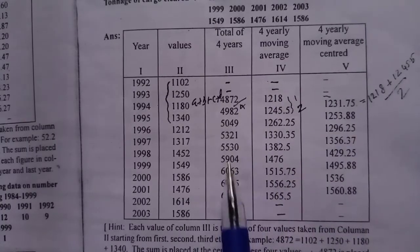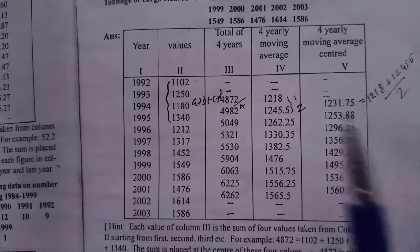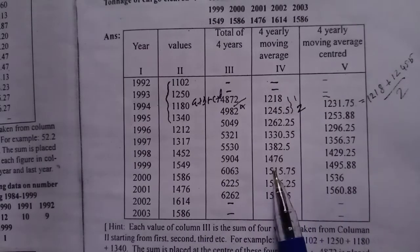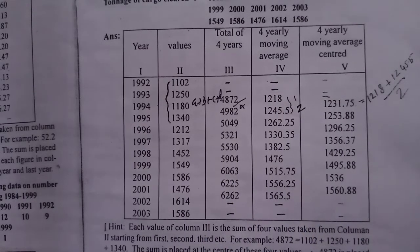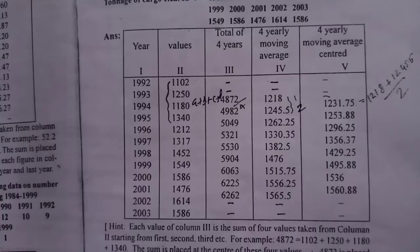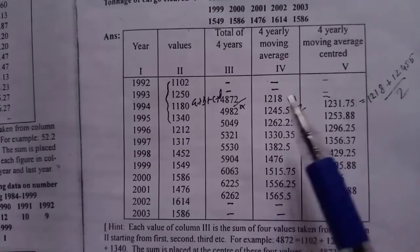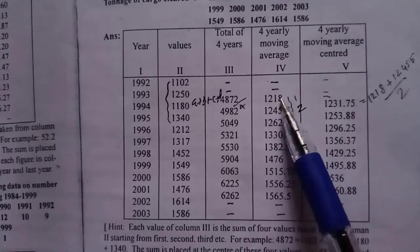We need to give the 4-yearly moving average value and divide the values as we move on. We take the 4-yearly moving average value by dividing by 4.